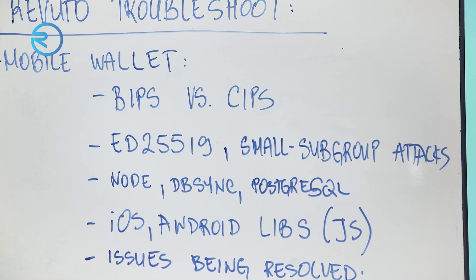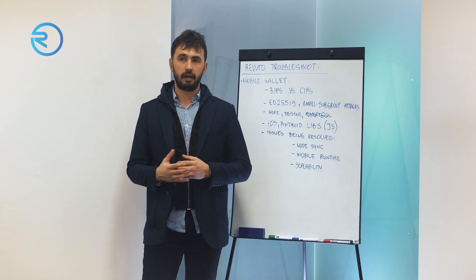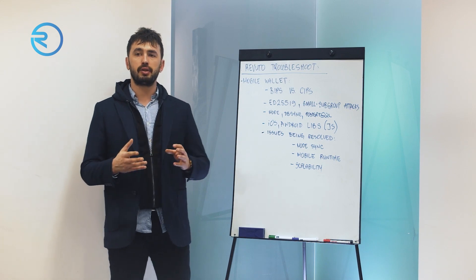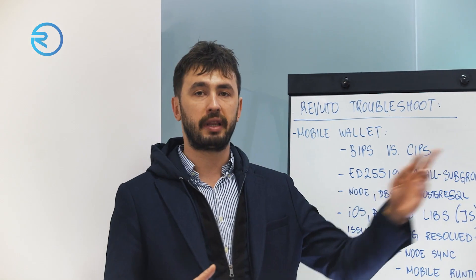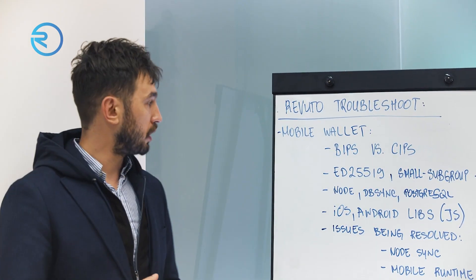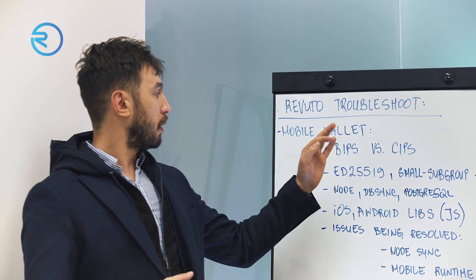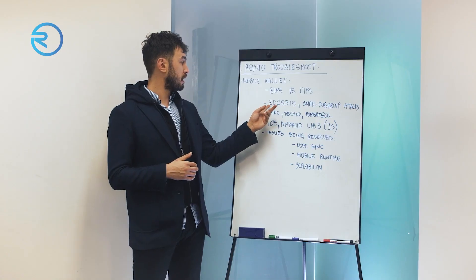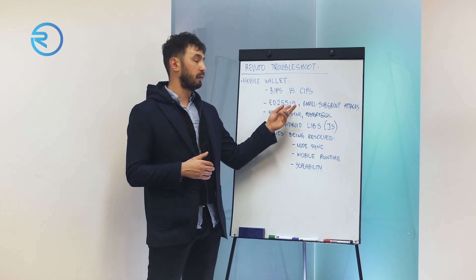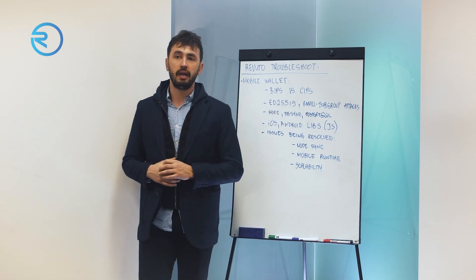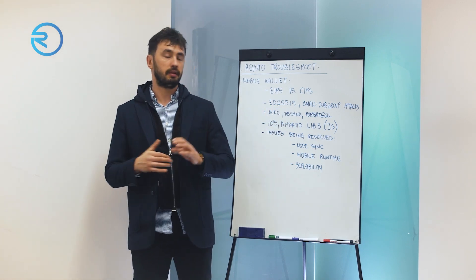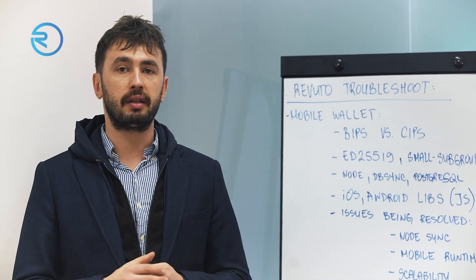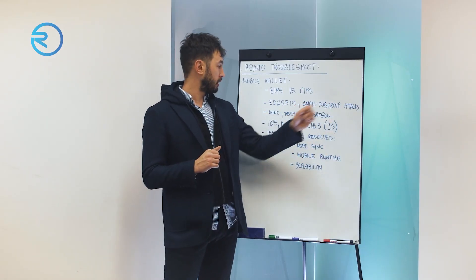In Cardano the story is a bit different. Cardano found out the possible issues and possible small subgroup attacks on the elliptic curve which is being used by BIP standards, and they implemented ED25519 generation method to mitigate all the risks around that particular possible attack.